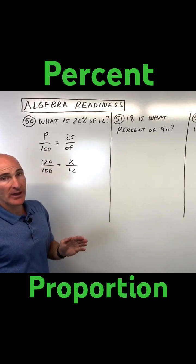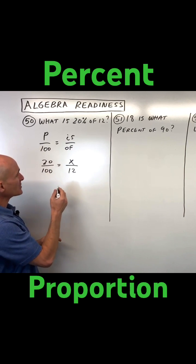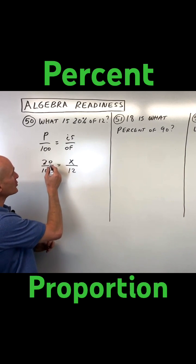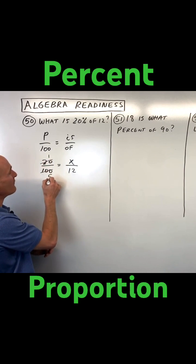Now you can cross multiply and solve, and that's a good way to do it if you're just using a calculator. You can also reduce, so I can see 20 and 100 reduce to 1 over 5.